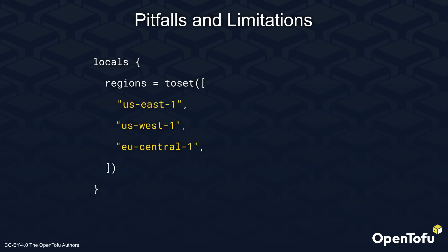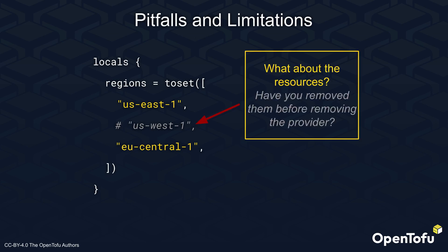The final limitation we would like to discuss is the one we already touched on before, related to removing an item from a set of providers. If you have a set of regions and pass these to a provider in a ForEach, you must make sure that all resources are removed from the region before you remove the provider instance itself. There are several ways to do this, one of which is discussed in this video and the accompanying blog post for easier copying.